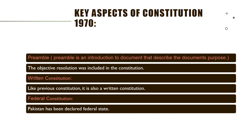Federal Constitution: Pakistan has been declared a federal state in the Constitution of 1973. The Federation of Pakistan consists of four provinces — Punjab, Sindh, Balochistan, and KPK — along with the Federal Capital Area and Tribal Areas, which are called FATA (Federally Administered Tribal Area) and PATA (Provincially Administered Tribal Area).